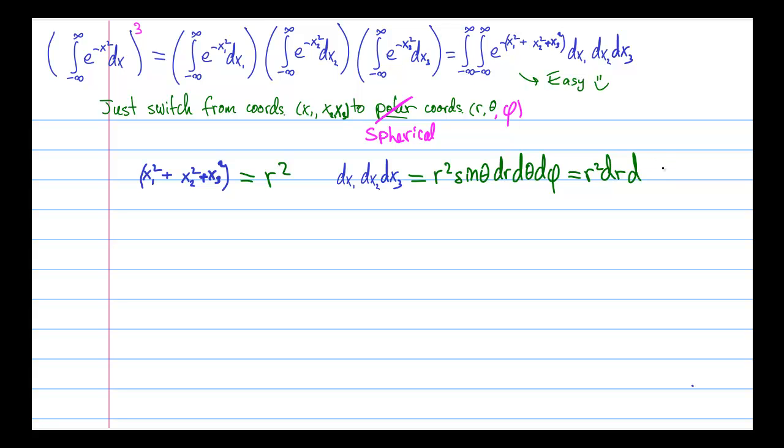And in the spherical coordinates is r squared dr times some stuff involving thetas and phis. And we actually want to separate the r squared dr from the angular variables. So we'll write it as r squared dr times d omega 2. And we'll get to what d omega 2 is in just a little bit.